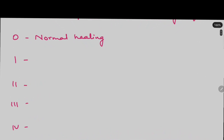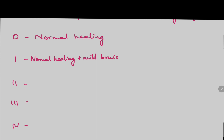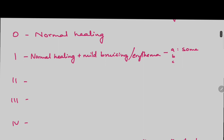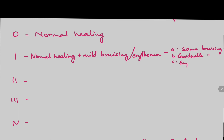Grade 1 is Normal Healing but with Mild Bruising or Erythema. This is divided into A, B, and C. A means there is some bruising. B means there is considerable bruising. And C is when there is Erythema — specifically Mild Erythema.